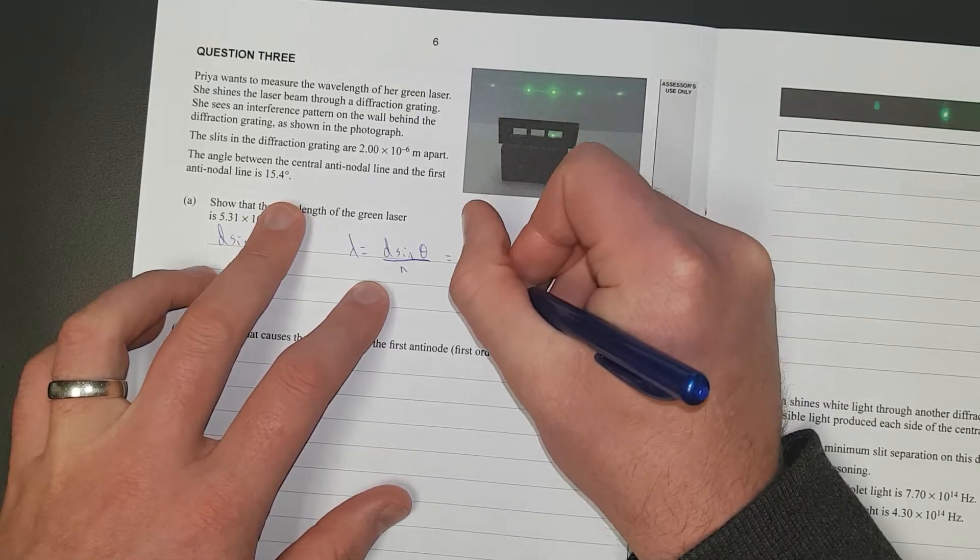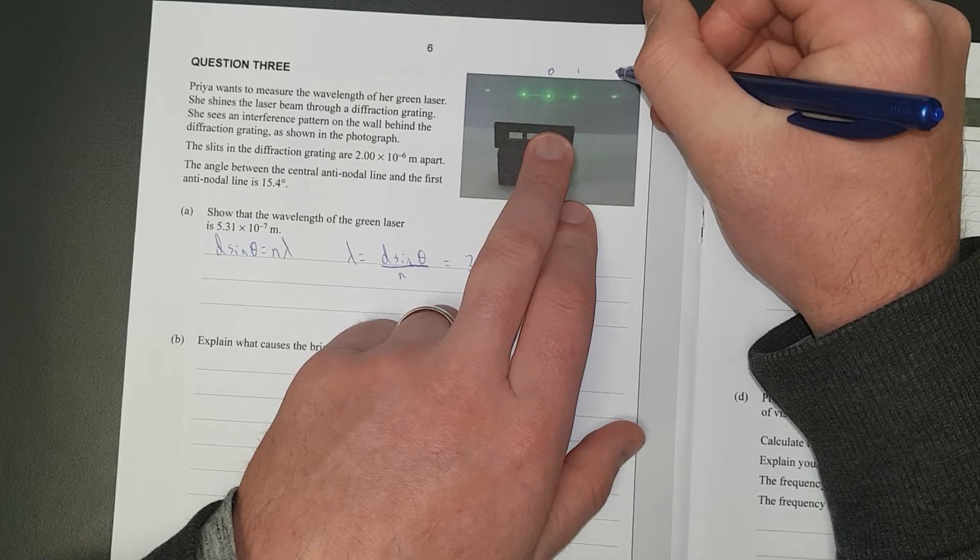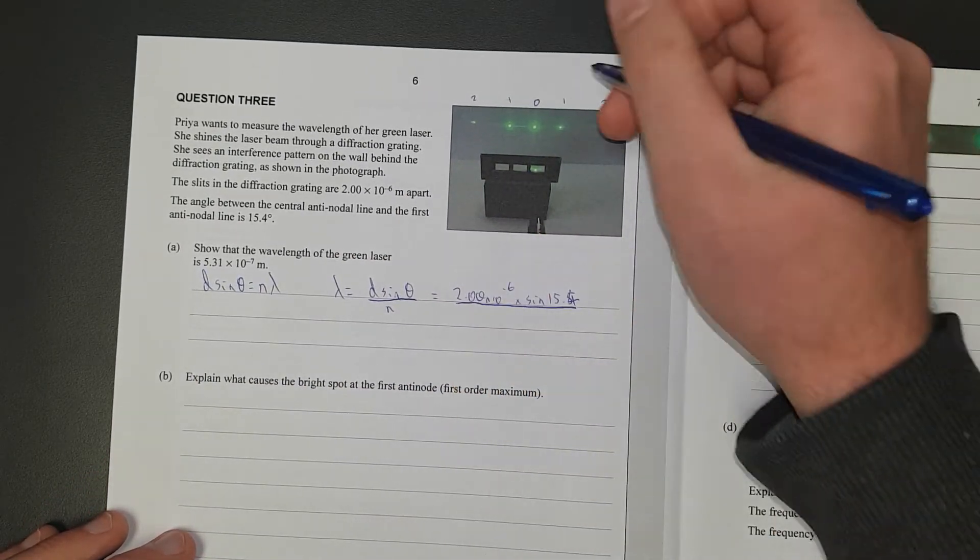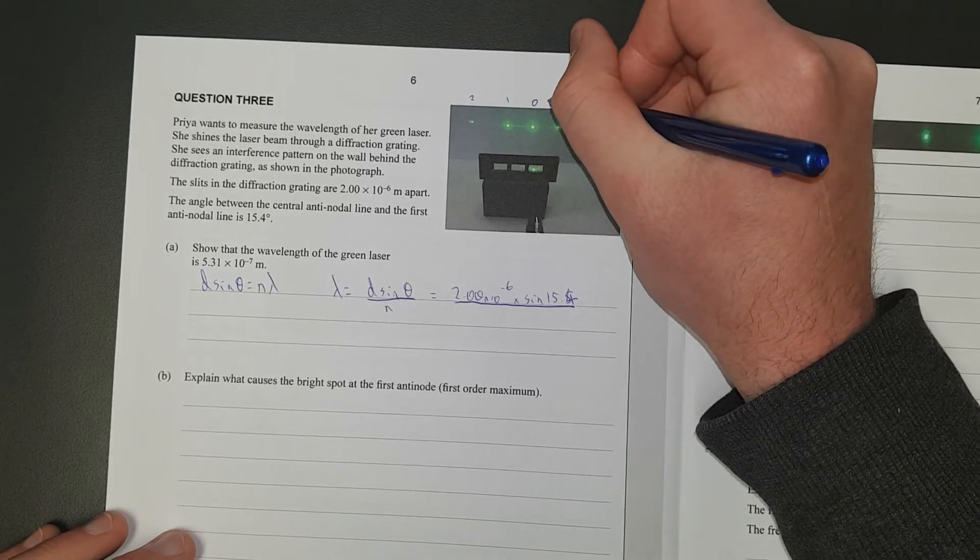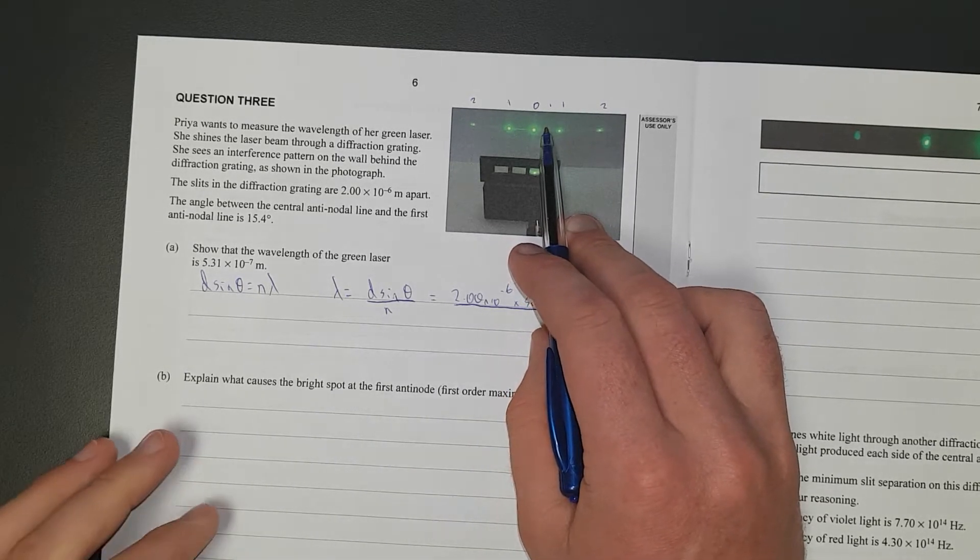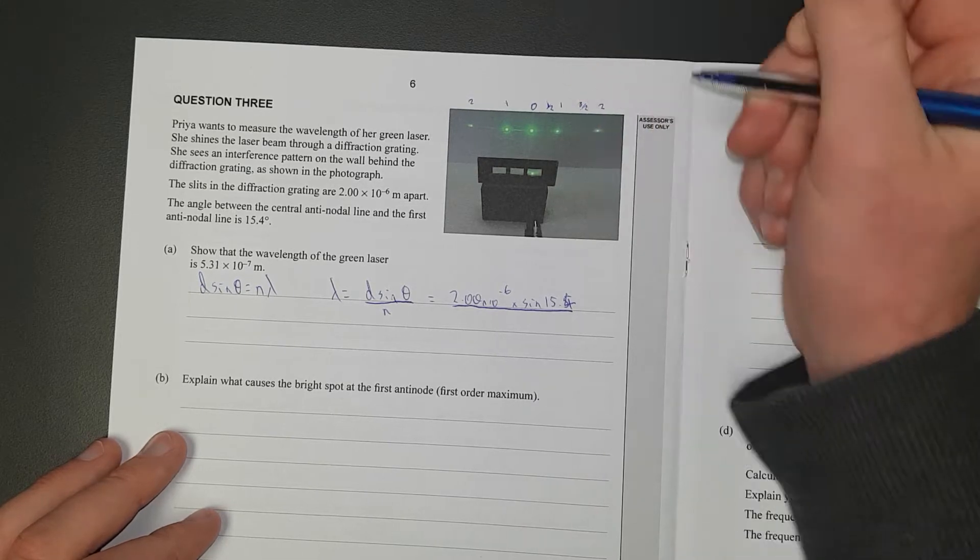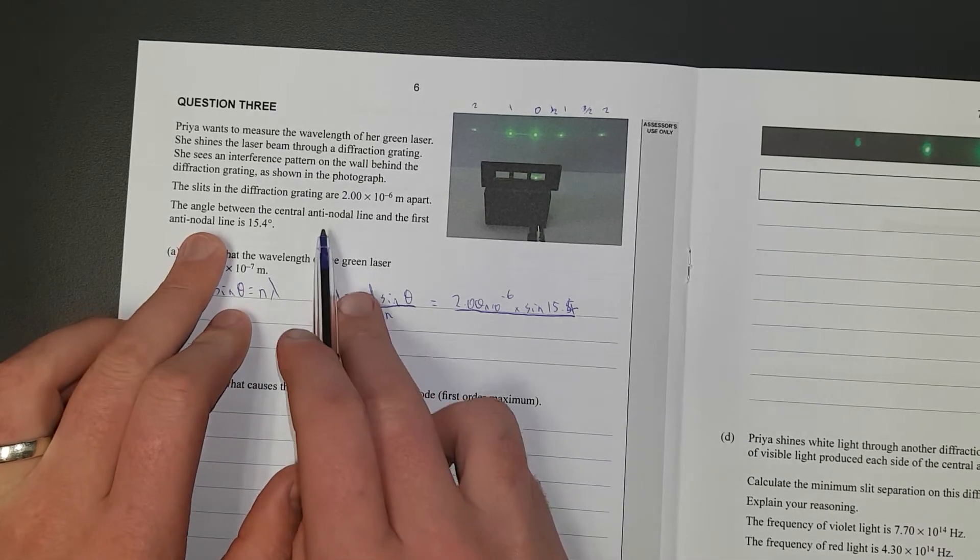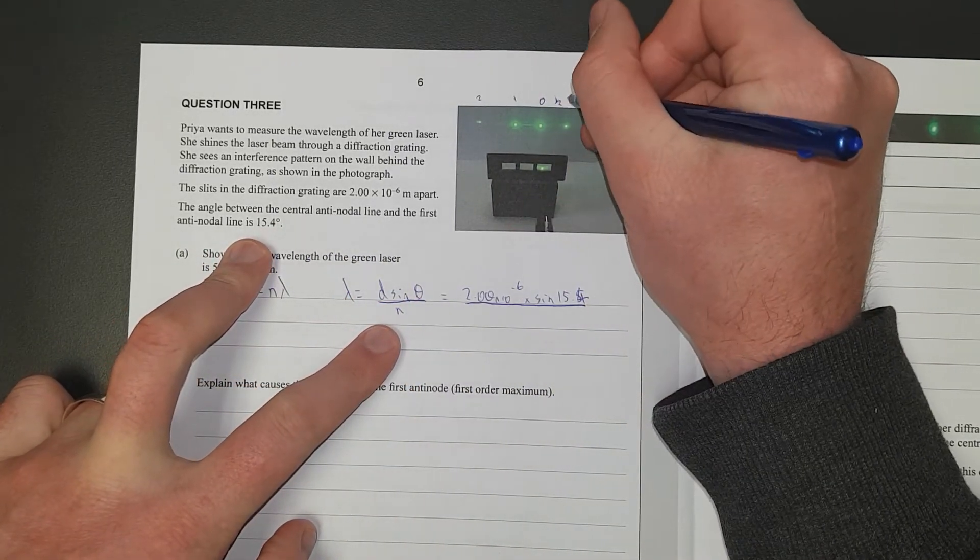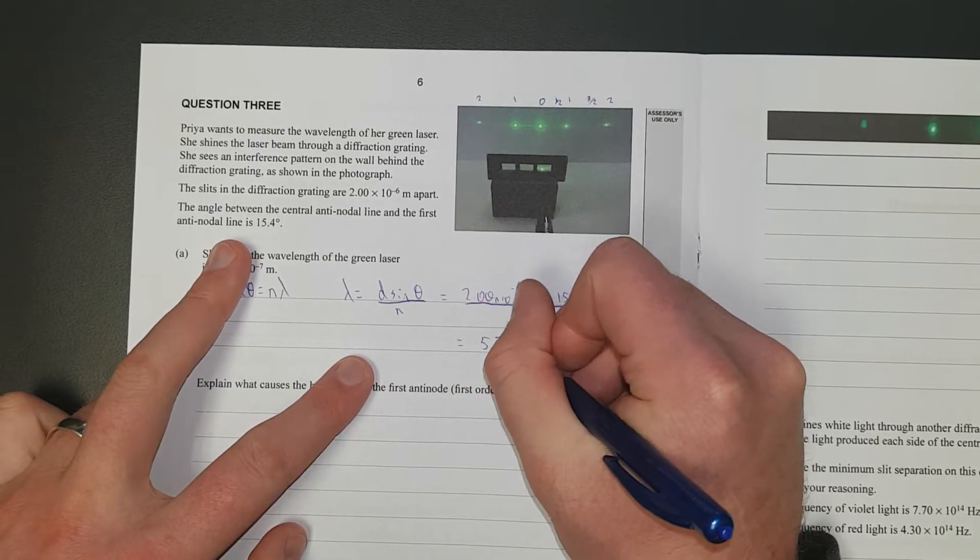The central nodal line is N equals 0. Then it goes 1 for an antinode, 2 for an antinode symmetrically. If it's exactly between the central antinode and the next antinode, that's the nodal spot where there's essentially no light. That equals 1 half, and then this spot here is 1. I'll call it 3 over 2, because that's 1 and 1 half. The angle between the central antinode line and the first nodal line is 15.4 degrees. That means N equals 1, because we're at this point here. So divide by 1, and that does equal 531 nanometers.